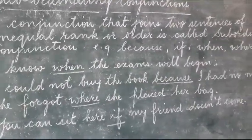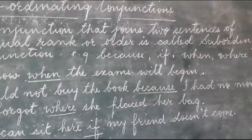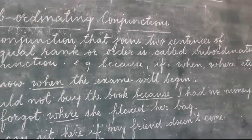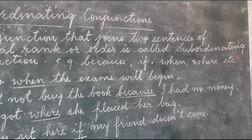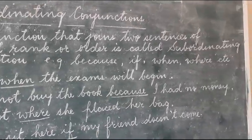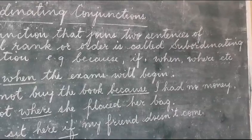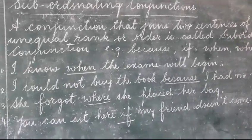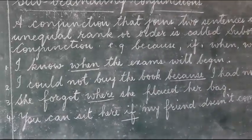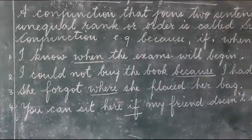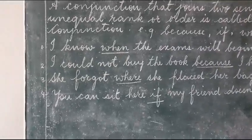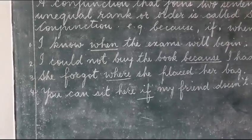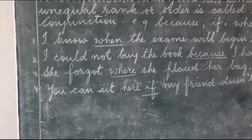The conjunctions for subordinating are: because, if, when, where, etc. Now we shall use these conjunctions in sentences and see how we can put together two sentences using these conjunctions and make one sentence.